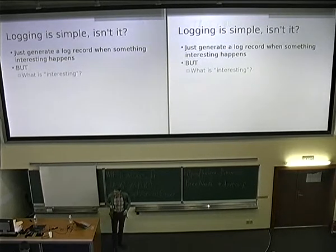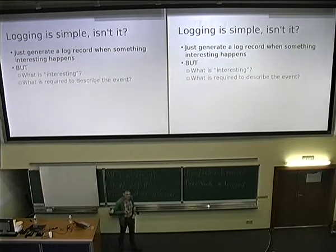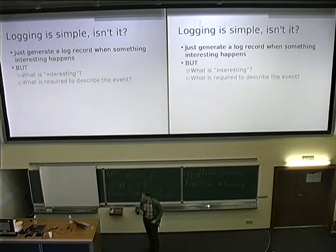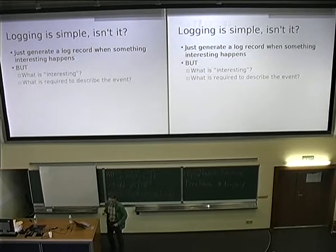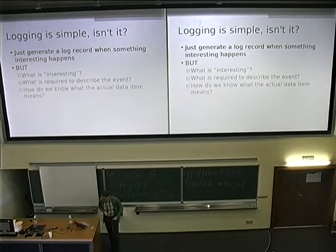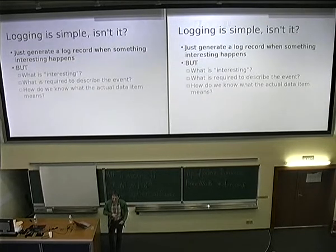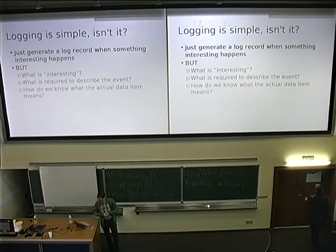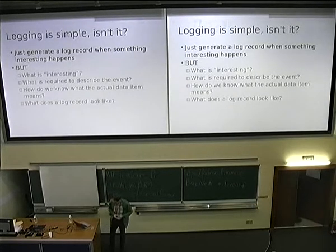What is required to describe the event? For example, if I create a file, which metadata do I need when I log it? How do I need to log user IDs — textual name, some ID? How do we know what the actual data item means? Different developers tend to follow different disciplines when logging, and it's often very hard to guess what the data item actually means.